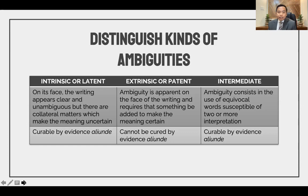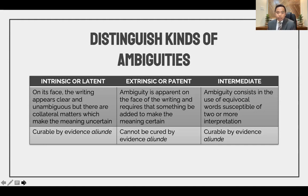Intrinsic or latent ambiguity can be cured by outside evidence — you can introduce evidence in order to aid the interpretation of the written agreement. Second is extrinsic or patent ambiguity, which is ambiguity apparent on the face of the writing and requires that something be added to make the meaning certain. If the ambiguity is extrinsic or patent, it cannot be cured by extrinsic evidence or evidence aliunde.